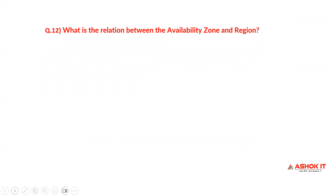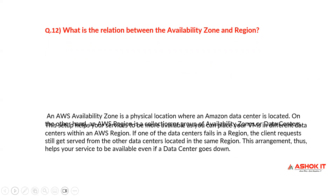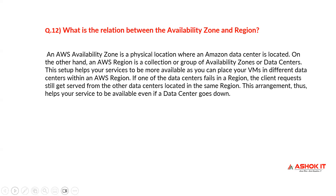What is the relation between an availability zone and a region? An AWS availability zone is a physical location where an Amazon data center is located. An AWS region is a collection or group of availability zones or data centers. This setup helps services to be more available, as you can place your virtual machines in different data centers within an AWS region. If one data center fails in the region, client requests still get served from another data center located in the same region.